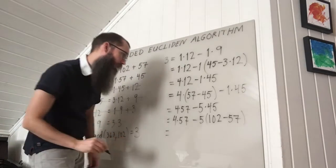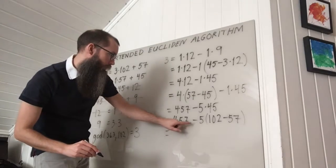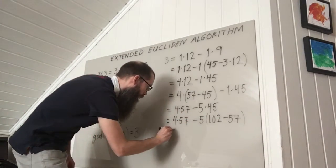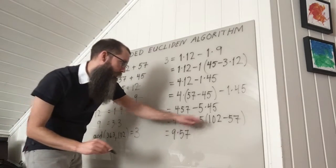So I have 4 times 57. So this is, I have 4 57's here and then plus another 5. So it's 9 57's. And then minus 5 102's.